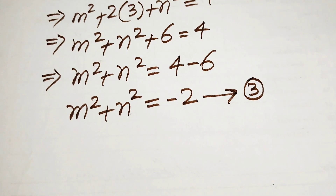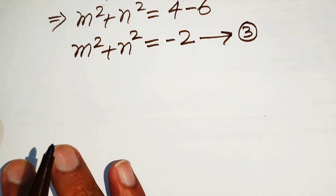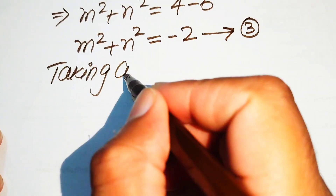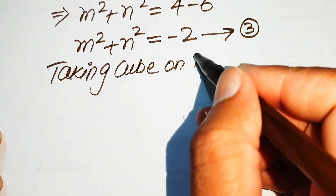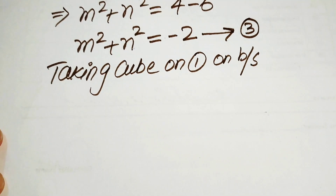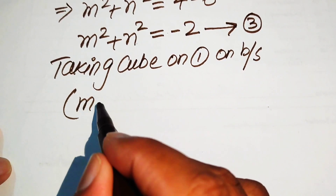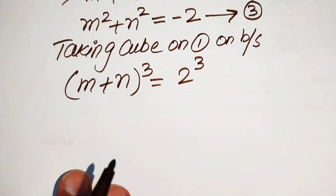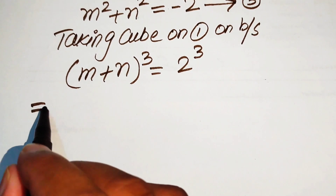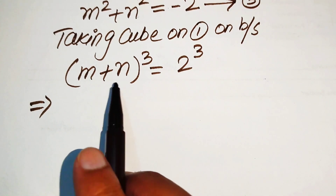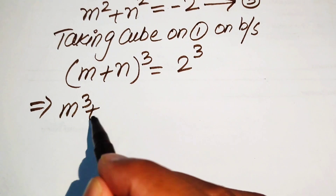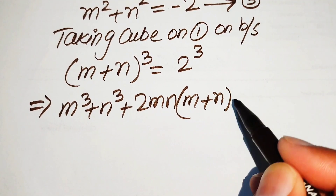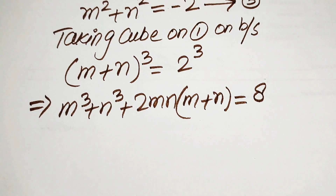In the next step we again focus on equation number 1 and take the cube on both sides. Taking cube on both sides of equation number 1, it is written as m plus n cubed equals 2 cubed. We use the famous cubic identity: m plus n cubed equals m cubed plus n cubed plus 3 times mn times m plus n, and 2 cubed equals 8.